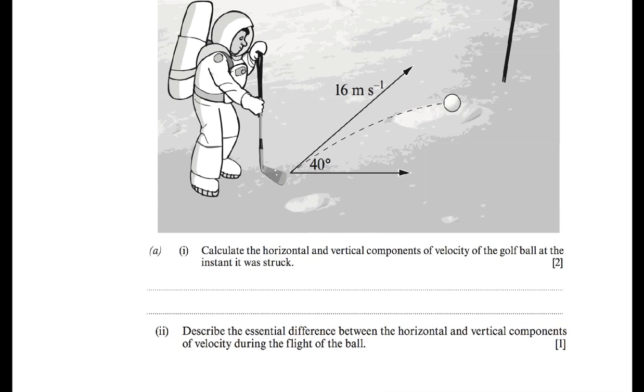The next question that I have is an example where an astronaut is playing golf on the surface of the moon. The initial velocity is 16 meters per second and is at an angle 40 degrees from the x axis. The question asks us to calculate the horizontal and vertical components of velocity of the golf ball at the instant it was struck.